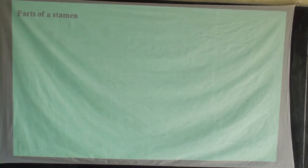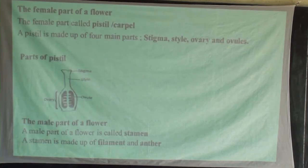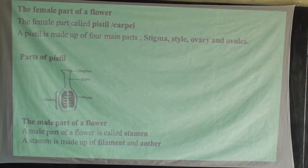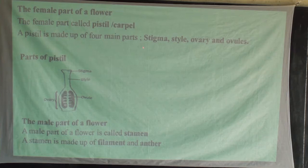We can also check on the female part of a flower. This part is called the pistil or carpel. A pistil is made up of parts: stigma, style, ovary, and ovules. When asked for the main three parts, you can say stigma, style, and ovary, because the ovules are formed within the ovary.